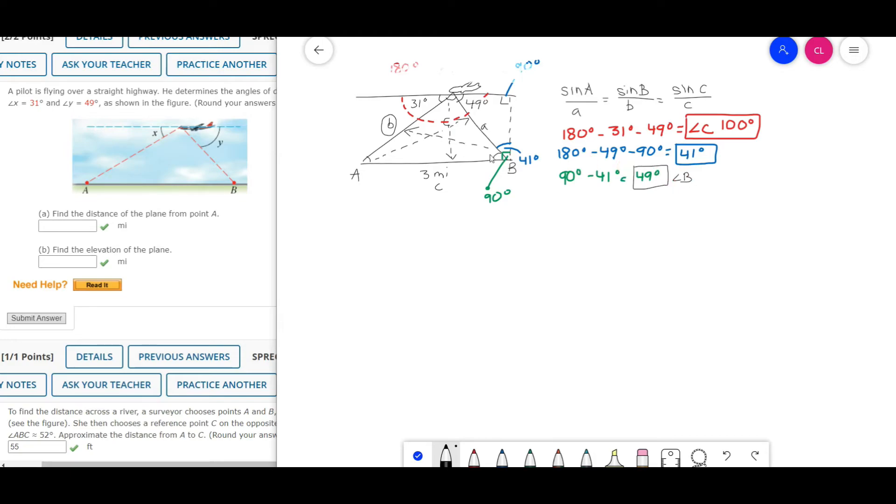That's angle B, right here. Now all you got to do is use the ratios to find out the measurement of side B.